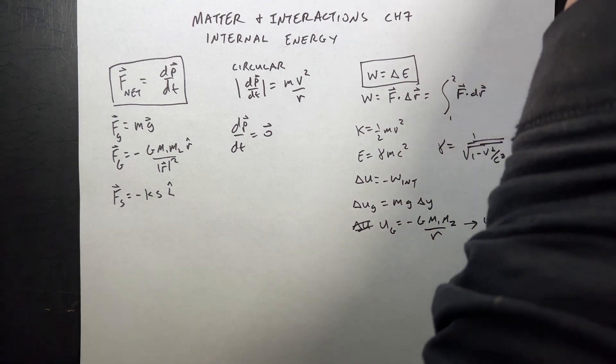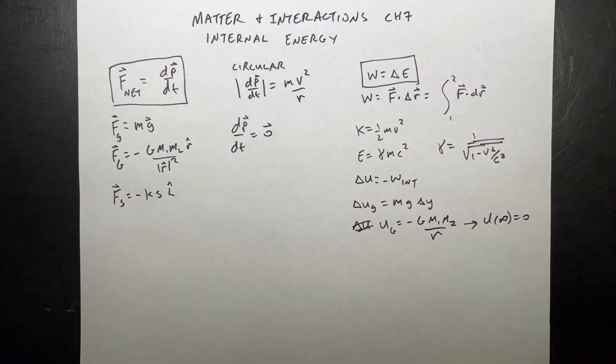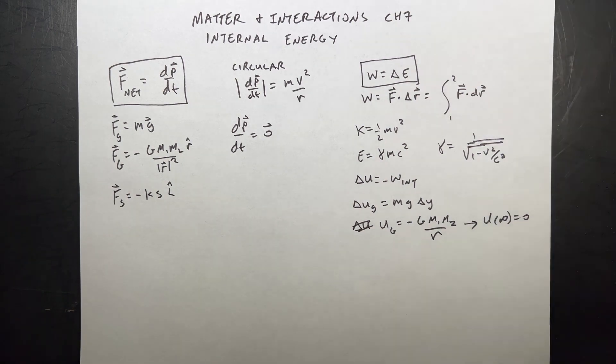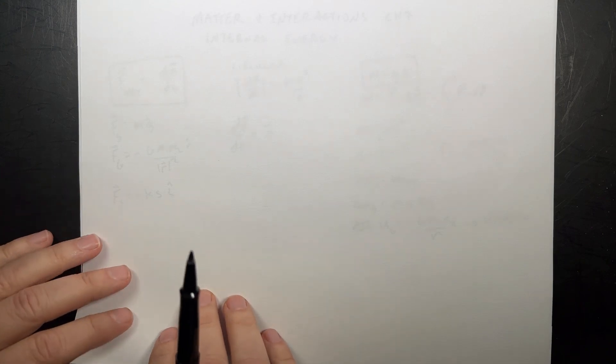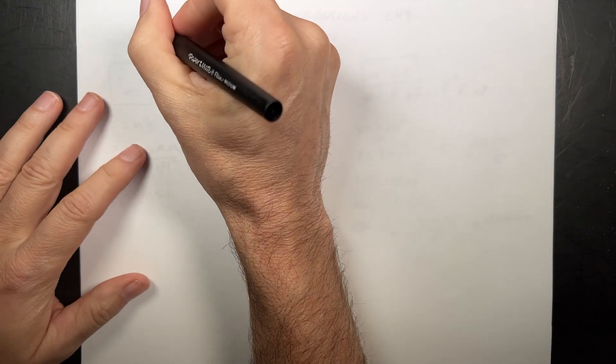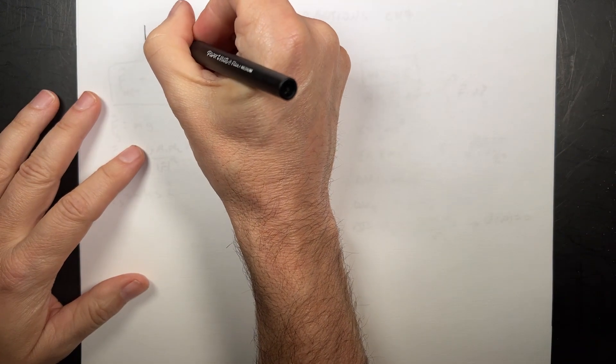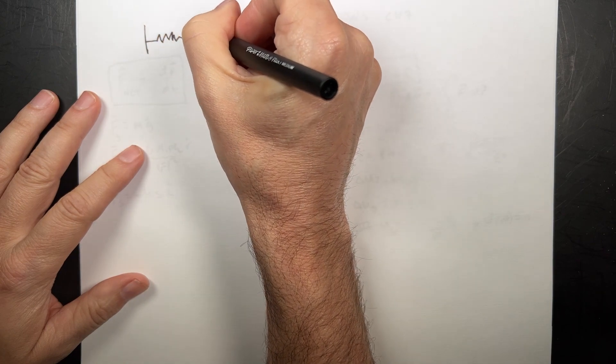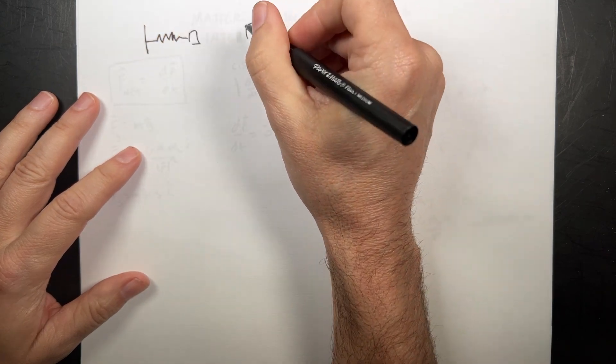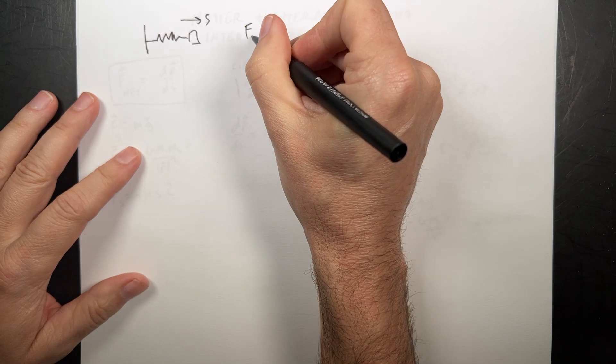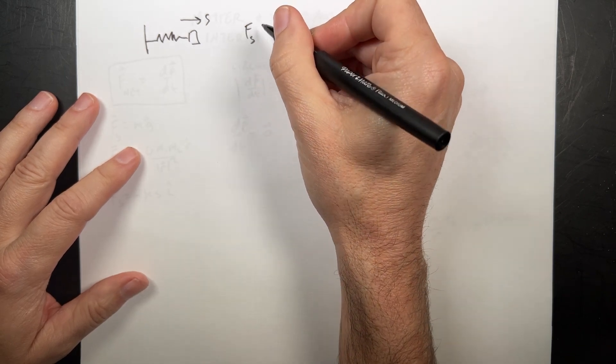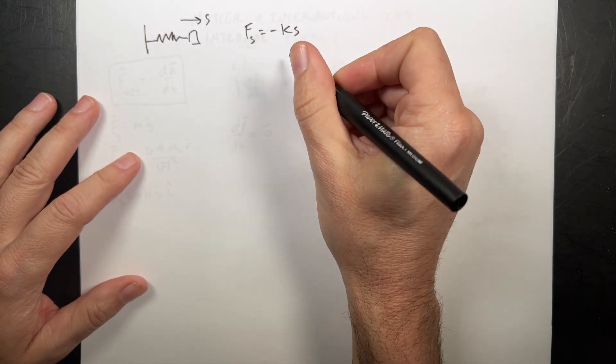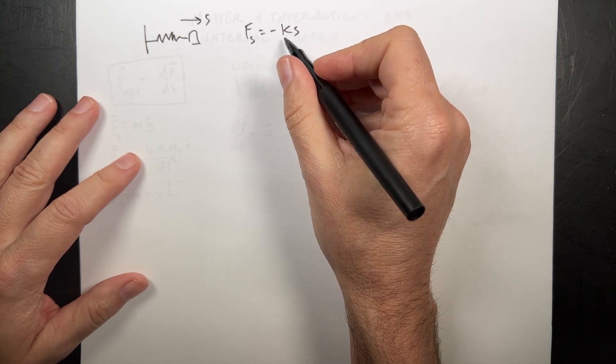Now, let's go to chapter seven. The first thing they do is look at a spring. Remember we have a spring. In the s direction, I can write the force, if it's a one dimensional spring, as negative ks, where s is the stretch, k is the spring constant.